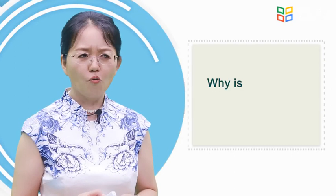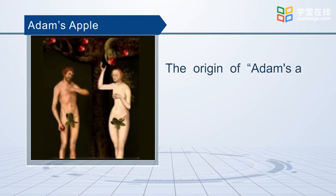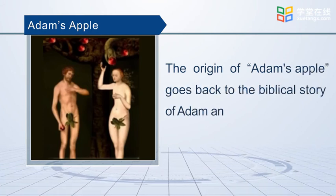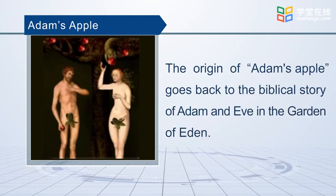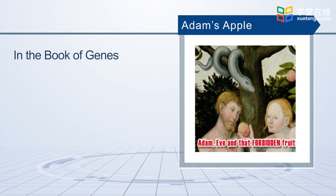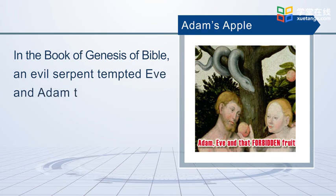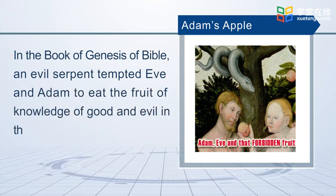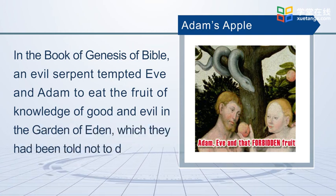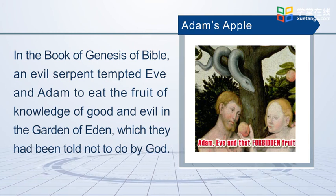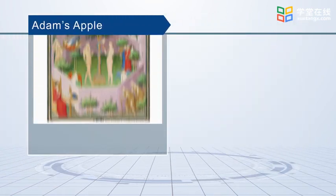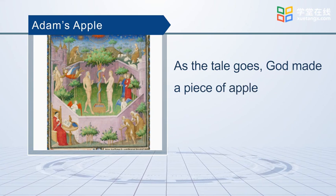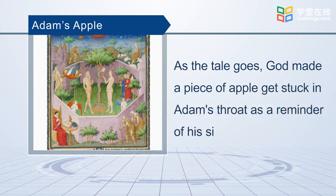Maybe you are wondering why it is called an Adam's apple. The origin of Adam's apple goes back to the Biblical story of Adam and Eve in the Garden of Eden. In the book of Genesis of the Bible, an evil serpent tempted Eve and Adam to eat the fruit of knowledge of good and evil in the Garden of Eden, which they had been told not to do by God. As the tale goes, God made a piece of apple get stuck in Adam's throat as a reminder of his sin. For more information, you can go to Webster's Dictionary. Thank you.